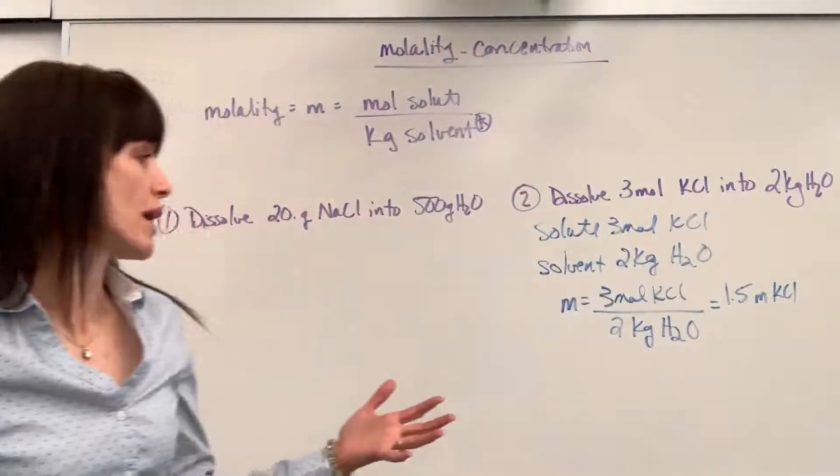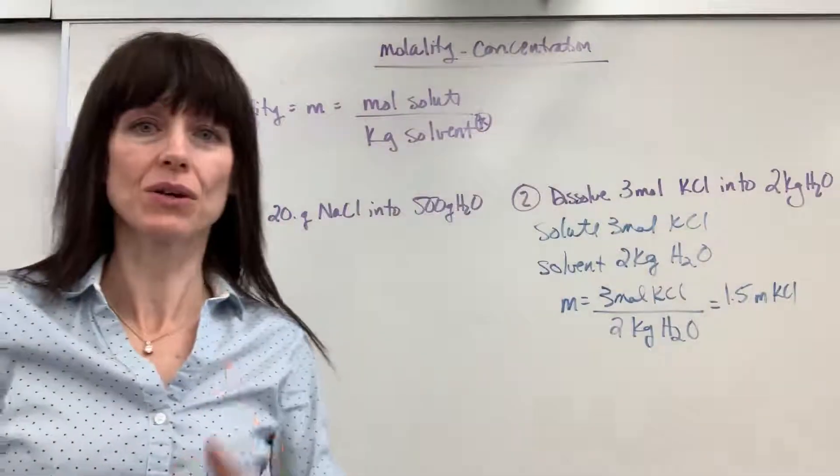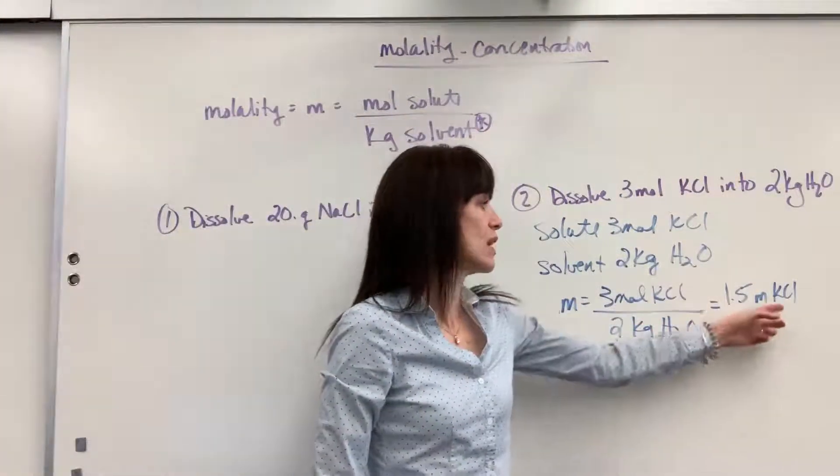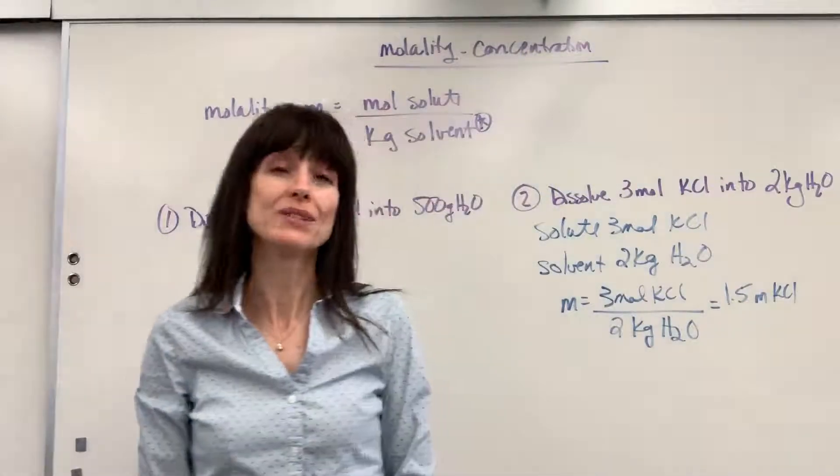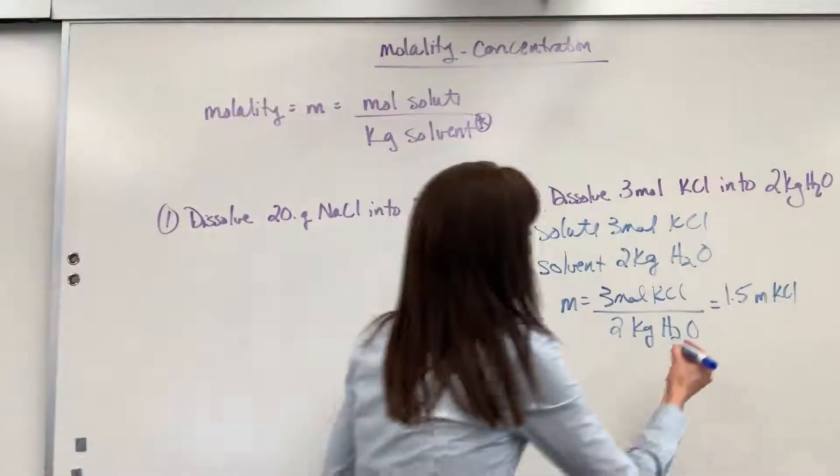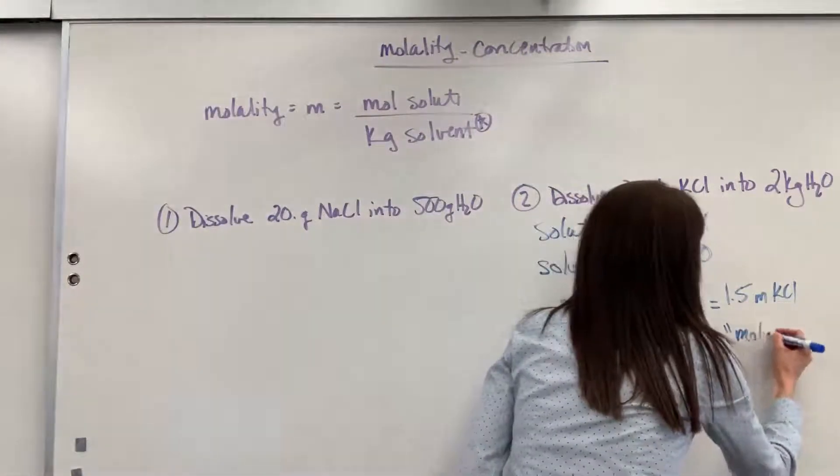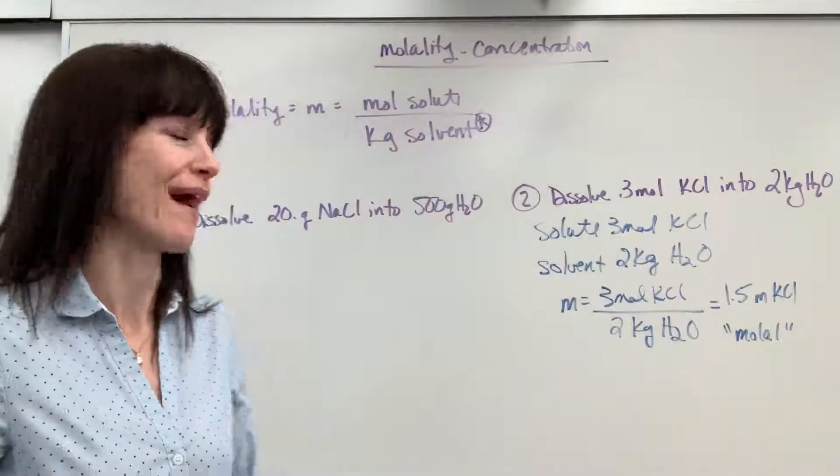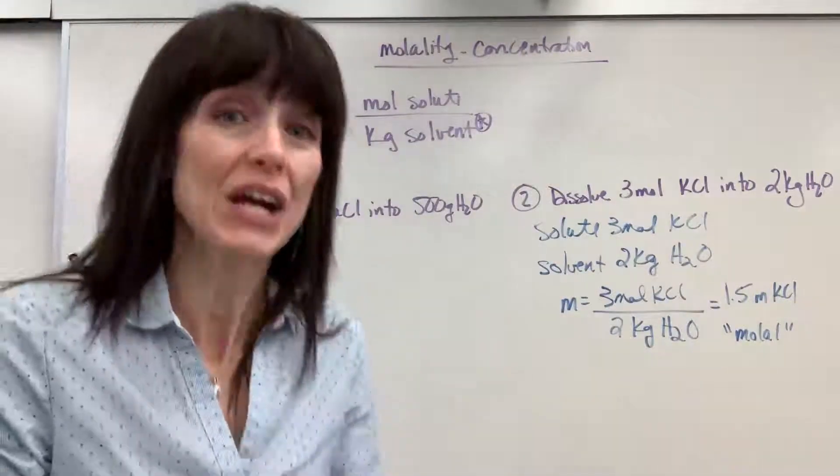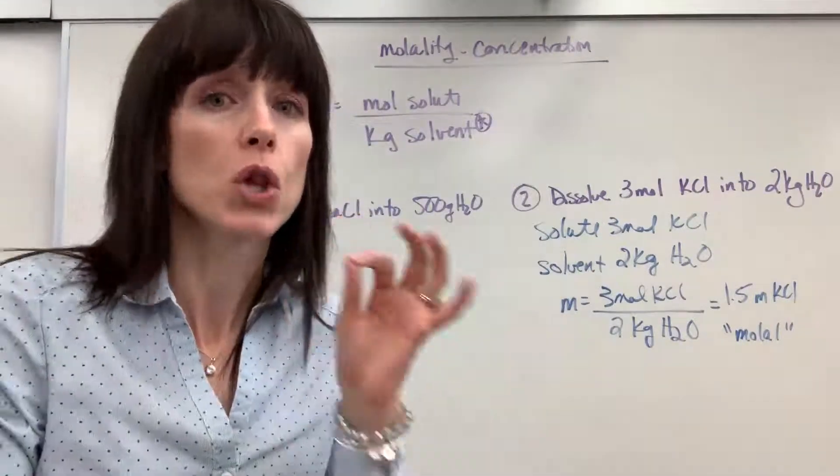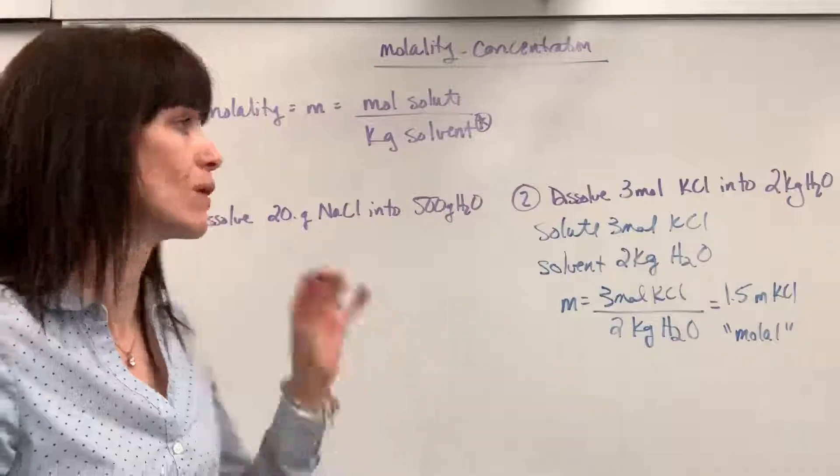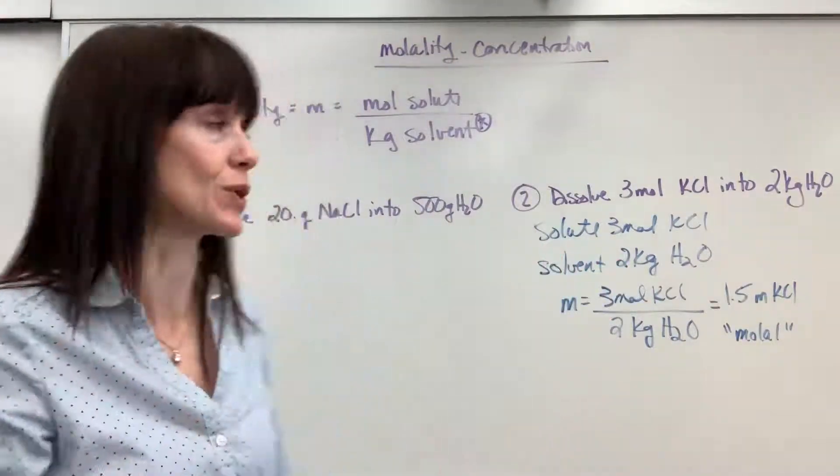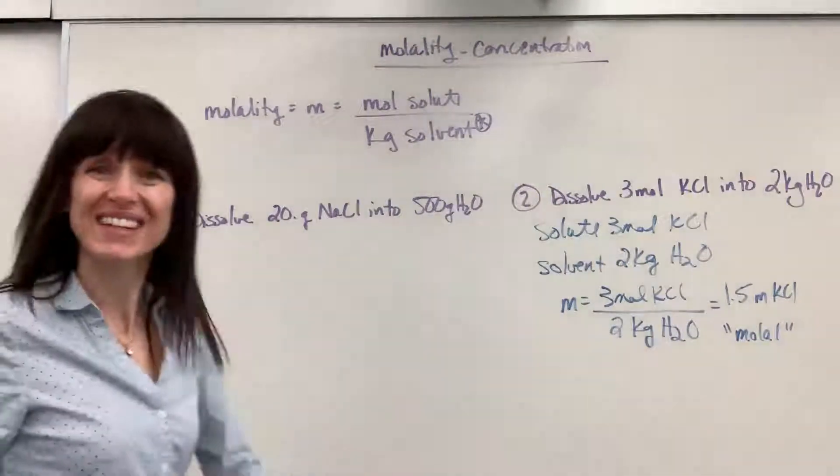So that tells us for every one kilogram of water, we've got 1.5 moles of potassium chloride. And the way you say that is molal. Let me write that down. M-O-L-A-L. 1.5 molal. You remember with molarity, we would call it molar. So this is molal, ending with an L. I'm sorry that scientists named these so close. Okay, let's do another one.